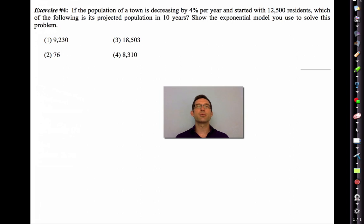So let's take a look. If a population of a town is decreasing by 4% per year and started off with 12,500 residents, which of the following is its projected population in 10 years? Show the exponential model you used to solve this problem. All right, well, if you think you have the idea of the decreasing, go for it, and then we'll work through the math. All right, let's do it. Well, if we are decreasing by 4% per year, then we're going to multiply by 0.96. How many years? 10 years. So we're going to get to multiply by 0.96 to the 10th, and we're going to have this.